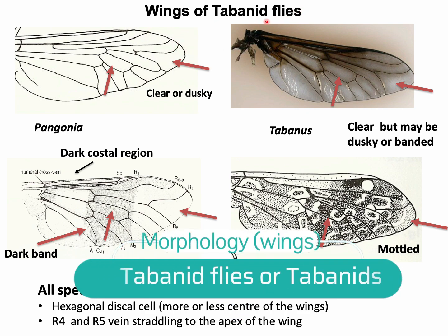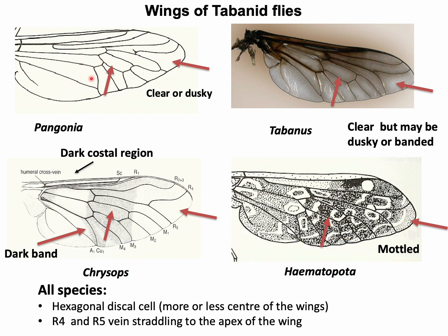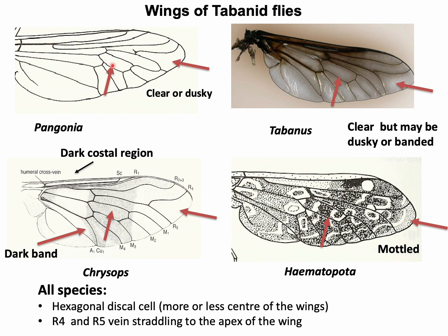The wings of Tabanid flies are each six to thirty millimeters in length and have well-developed wing venation. Almost similar wing venation is observed in each genus, so it is not possible to differentiate genera based on wing venation alone. The discal cell is hexagonal in shape in all genera and is located more or less in the center of the wing. Radial veins four and five extend to the apex in all genera.